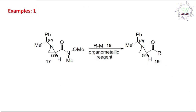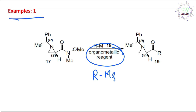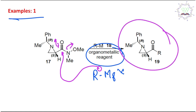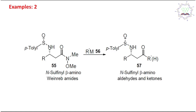Now let's learn through examples. In the first example, the cyclopropane-containing Weinreb amide reacts with organometallic reagents like RLi or RMgX. RMgX is nucleophilic, attacks, opens up, the leaving group departs, and the corresponding ketone is produced. This is a ketone adjacent to the cyclopropane ring. Importantly, the asymmetry of the chiral center is also maintained.